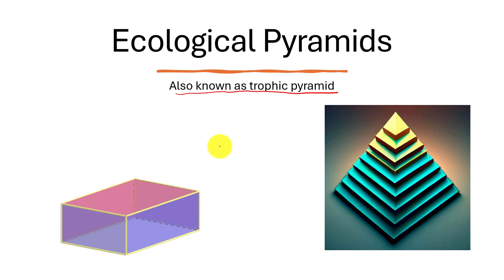The area of a pyramid's base decreases towards the top or apex. We can relate these base areas to organisms at a particular trophic level.